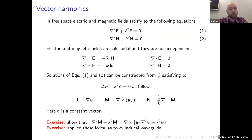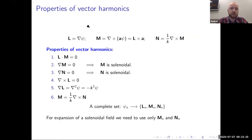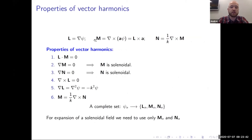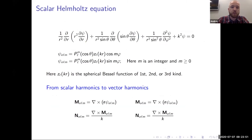Outside of the sphere we assume that we have air, so k is just k-naught. In order to construct the basic vector functions, we first need to solve the scalar equation. If we know the solution for the scalar equation, then we can construct three independent vector functions which will arrange a basis for a vector field. These functions are called L (longitudinal), so it's potential — and we will not take into account these functions because this function describes a potential field. We will work only with functions M and N.